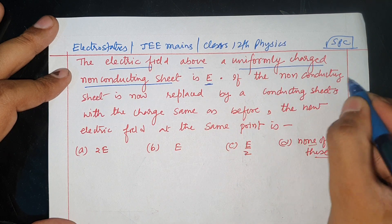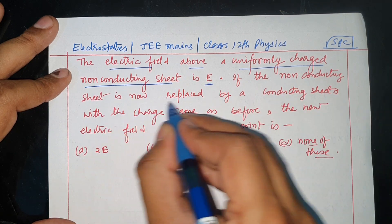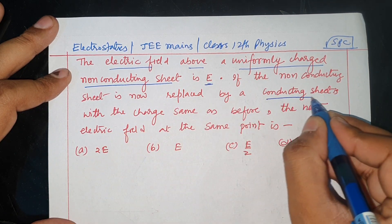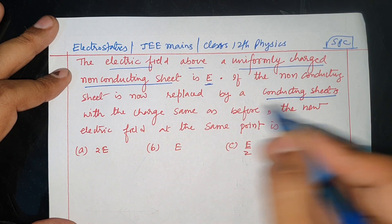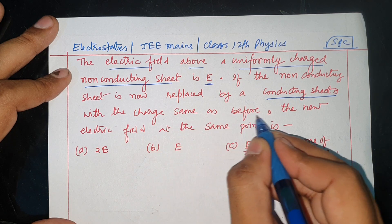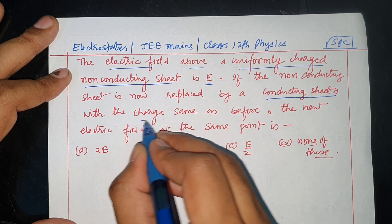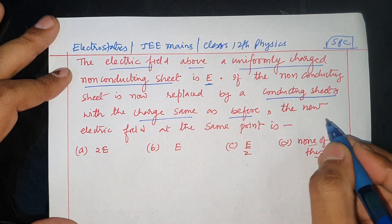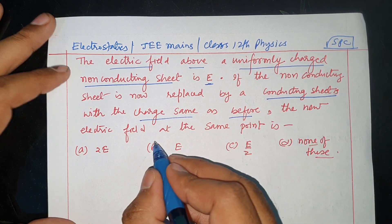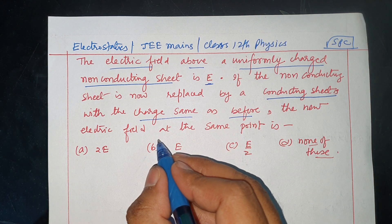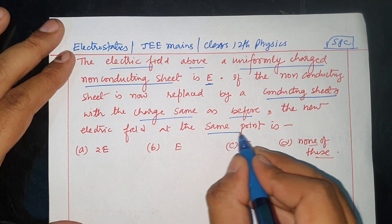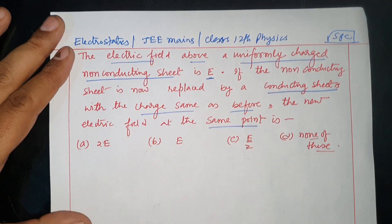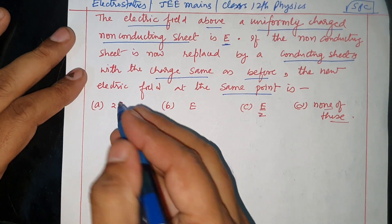If the non-conducting sheet is now replaced by a conducting sheet with the same charge as before, what is the new electric field at the same point? Let's solve this.